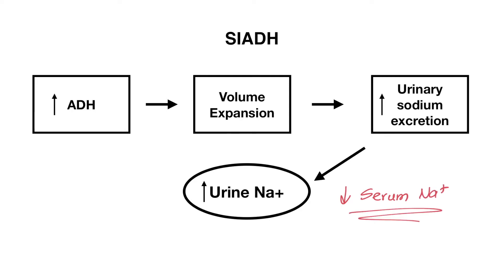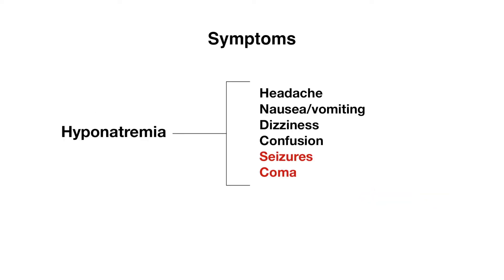Patients with SIADH will present with hyponatremia, and we can range from being asymptomatic to symptomatic, and these symptoms can vary. Patients can have more minor symptoms like a headache, nausea, vomiting, and some dizziness and confusion, to more severe symptoms like seizures and coma, and this typically occurs at really low sodium levels.